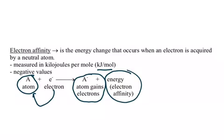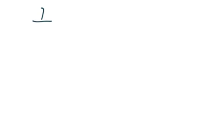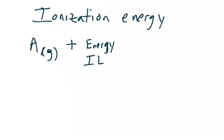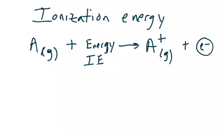I want to compare electron affinity with ionization energy, which was another trend you learned before. With ionization energy, you have an atom in the gas phase, and the definition is the energy needed to remove an electron from a neutral atom. That energy is ionization energy. It takes energy to remove an electron, and as a result the atom becomes positively charged — a cation in the gas phase.